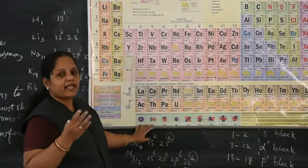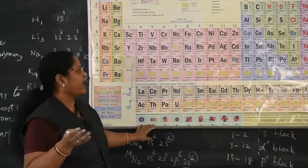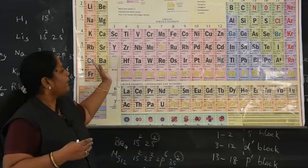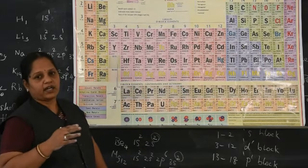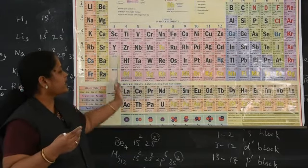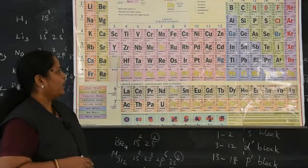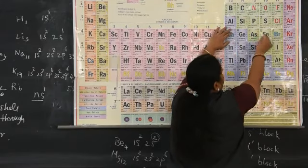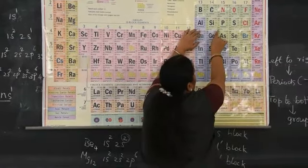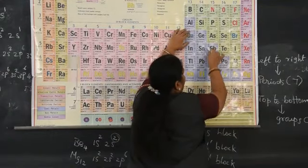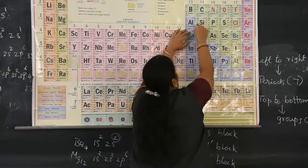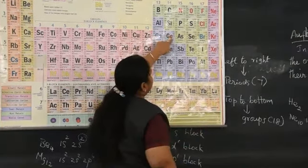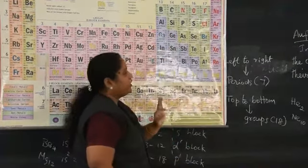Why are some elements called semi-metals or metalloids? Because the properties of certain elements are in between those of metals and non-metals — such elements are called metalloids. Examples include silicon, arsenic, antimony, and tellurium.